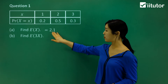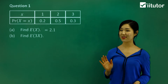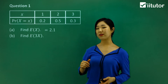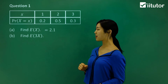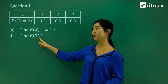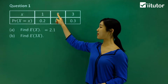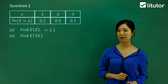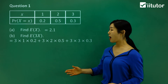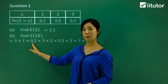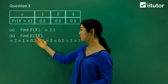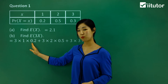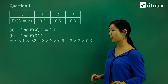Let's do part B. The answer for part A is 2.1, so we can refer to that later. Part B asks us to calculate the expected value of 3x. We're still calculating expected value, but we want the expected value of 3 times the variable. So we multiply each variable by 3, then still multiply by the probability: 3 times 1 times 0.2, plus 3 times 2 times 0.5, plus 3 times 3 times 0.3, keeping the same procedure.